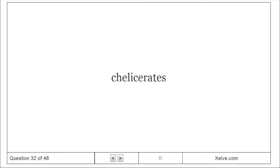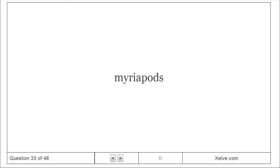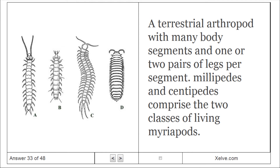Chelicerates. An arthropod that has chelicerae and a body divided into a cephalothorax and an abdomen. Living chelicerates include sea spiders, horseshoe crabs, scorpions, ticks, and spiders. Myriapods. A terrestrial arthropod with many body segments and one or two pairs of legs per segment; millipedes and centipedes comprise the two classes of living myriapods.